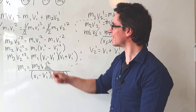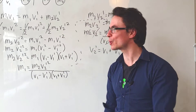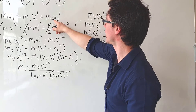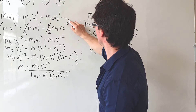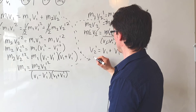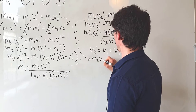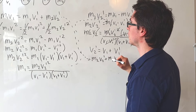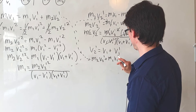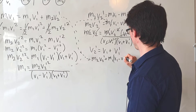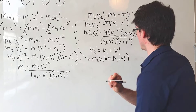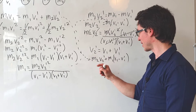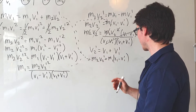Now that we have this result, let's substitute it back into our original conservation of momentum equation. I'm going to rearrange that equation for m2 v2 prime: m2 v2 prime equals m1 v1 minus m1 v1 prime, i.e. m1 times (v1 minus v1 prime). Now let's substitute in, because we know that v2 prime equals v1 plus v1 prime.